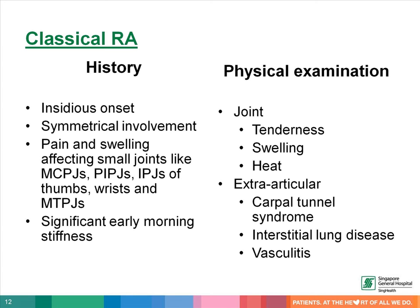Classical rheumatoid arthritis usually has a history of insidious onset with symmetrical involvement. The pain and swelling usually affect the small joints, like the metacarpophalangeal joints and the proximal interphalangeal joints. Patients also complain of significant early morning stiffness. On physical examination, the joints are tender and swollen. Sometimes we find extra-articular involvement like Caplan's syndrome, interstitial lung disease, and vasculitis.